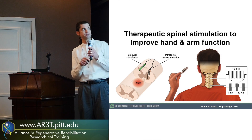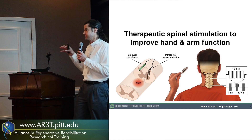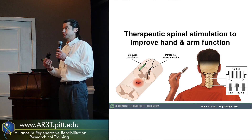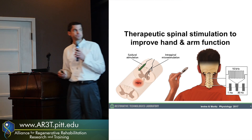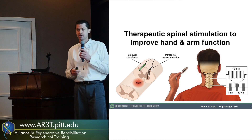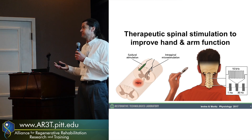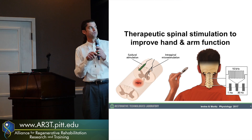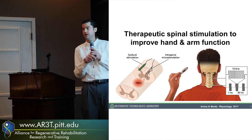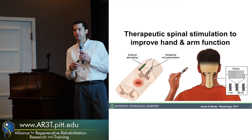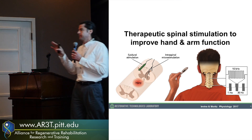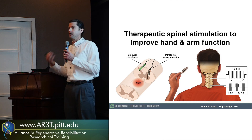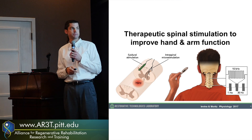We'll begin by talking about intraspinal microstimulation — actually inserting tiny hair-like wires within the spinal cord parenchyma to put electrical charge near the motor neurons or near the interneurons. We'll talk about some of our early successes there, including attempts to influence the fate of stem cells that were transplanted below the injury. Then we'll move to optogenetic stimulation, in the same location as epidural stimulation — laying on the surface of the spinal cord outside the dura.